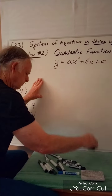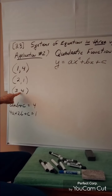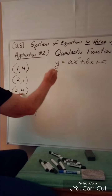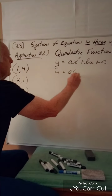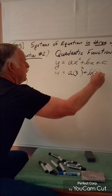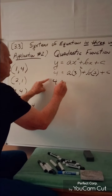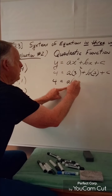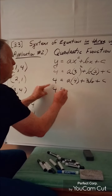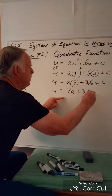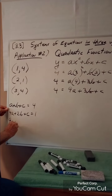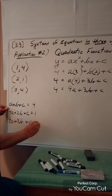Now the third point (3, 4): 3 is our x and 4 is our y. Substituting: 4 = a times 3 squared plus b times 3 plus c. So 4 = 9a + 3b + c. Writing it in standard form: 9a + 3b + c = 4.